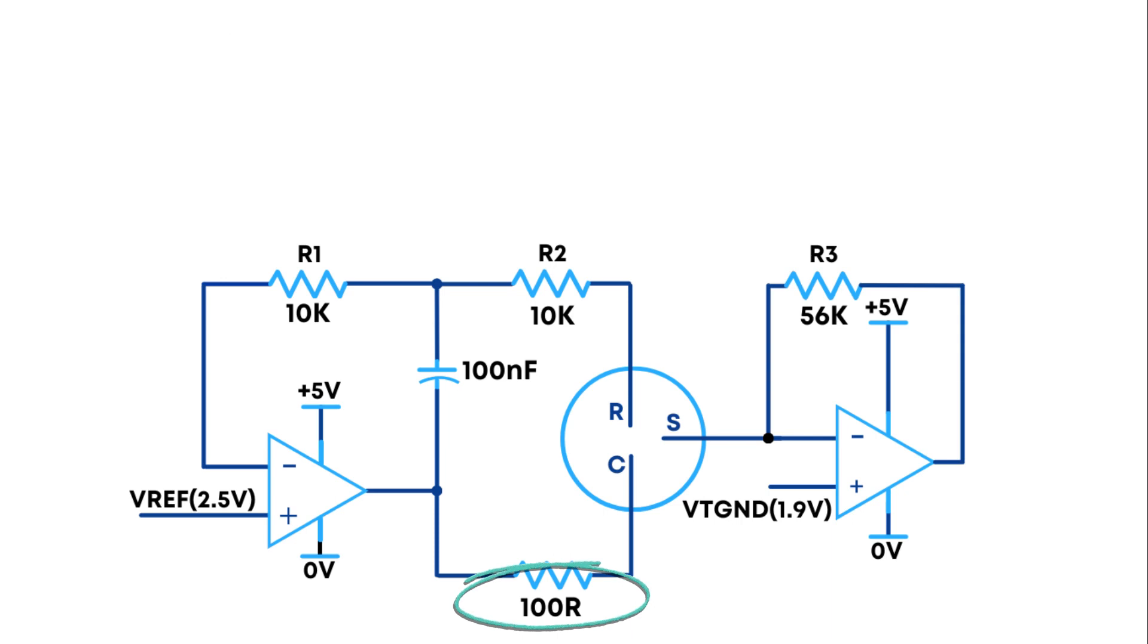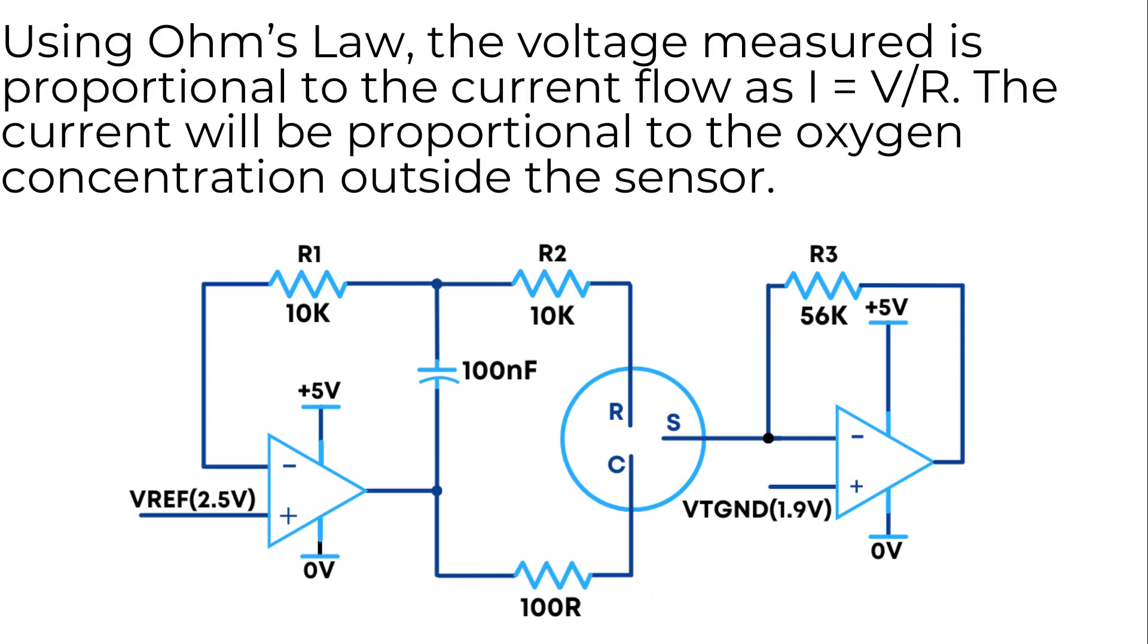Using Ohm's law, the voltage measured is proportional to the current flow as I equals V divided by R. The current measured will be proportional to the oxygen concentration outside the sensor.